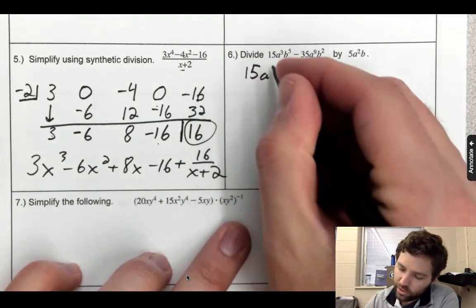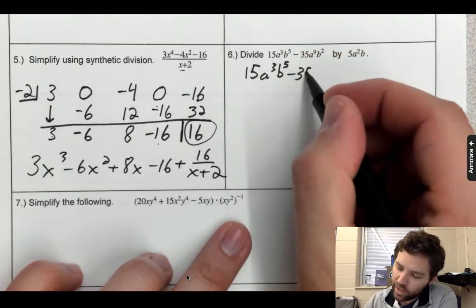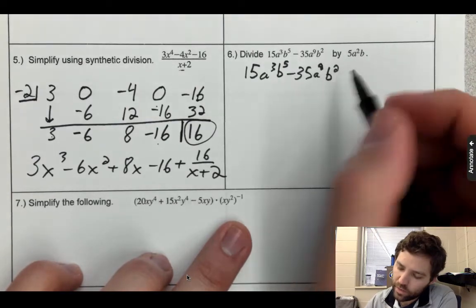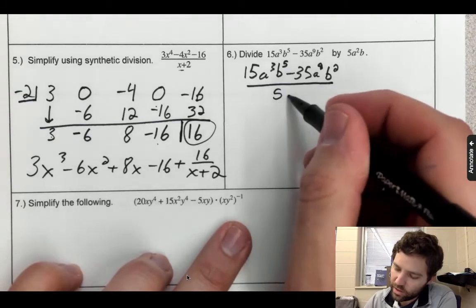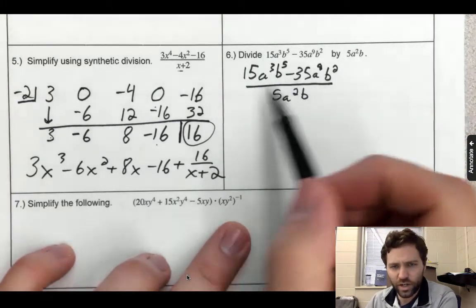I'm going to take 15a³b⁵ minus 35a⁹b². Students typically are not huge fans of long division, so if you set it up as a fraction like this,